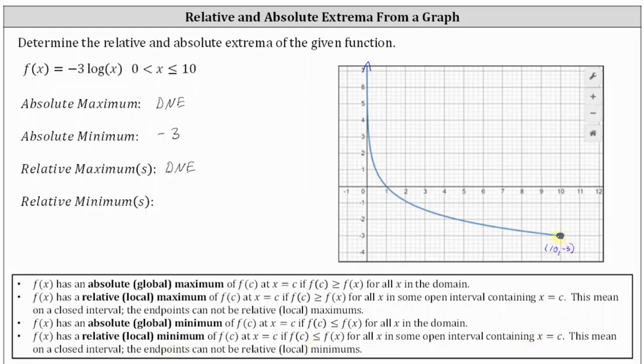So because this low point is an endpoint, we're not able to approach x equals 10 from the right. Therefore, even though this is a low point, it does not meet the definition of a relative minimum, and the function doesn't have a relative minimum over the stated domain. We enter DNE for relative minimum.